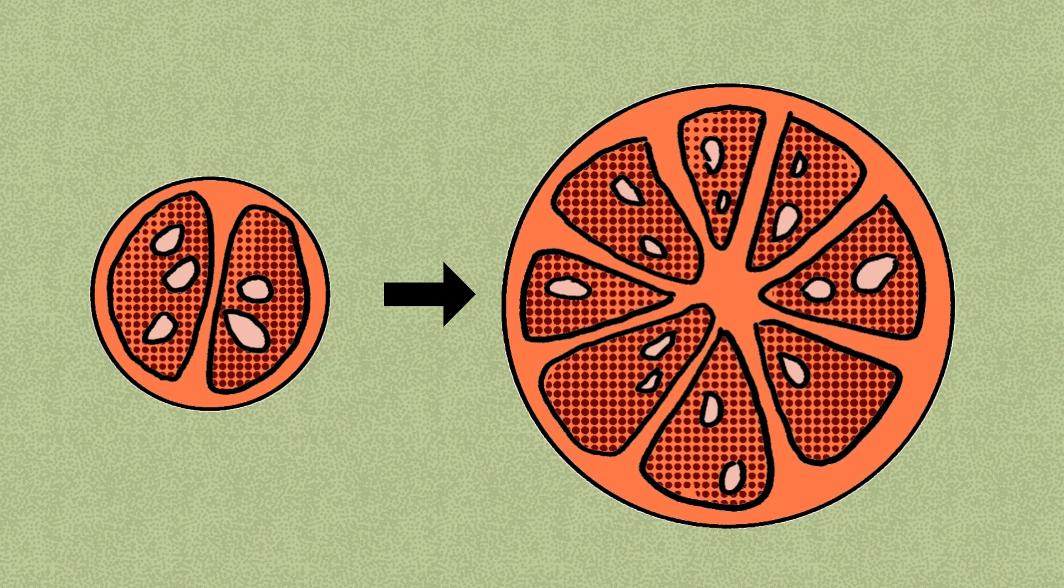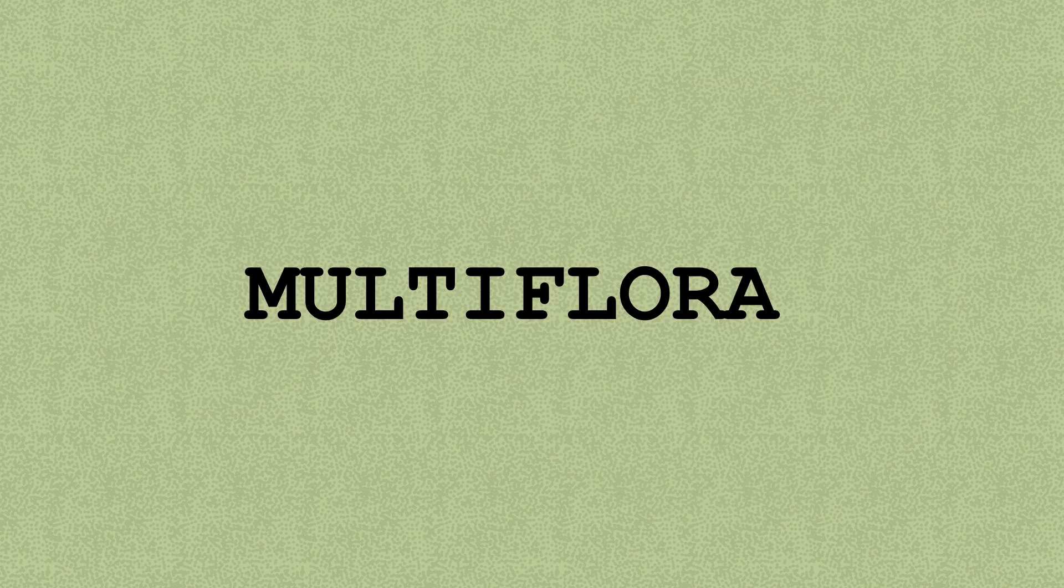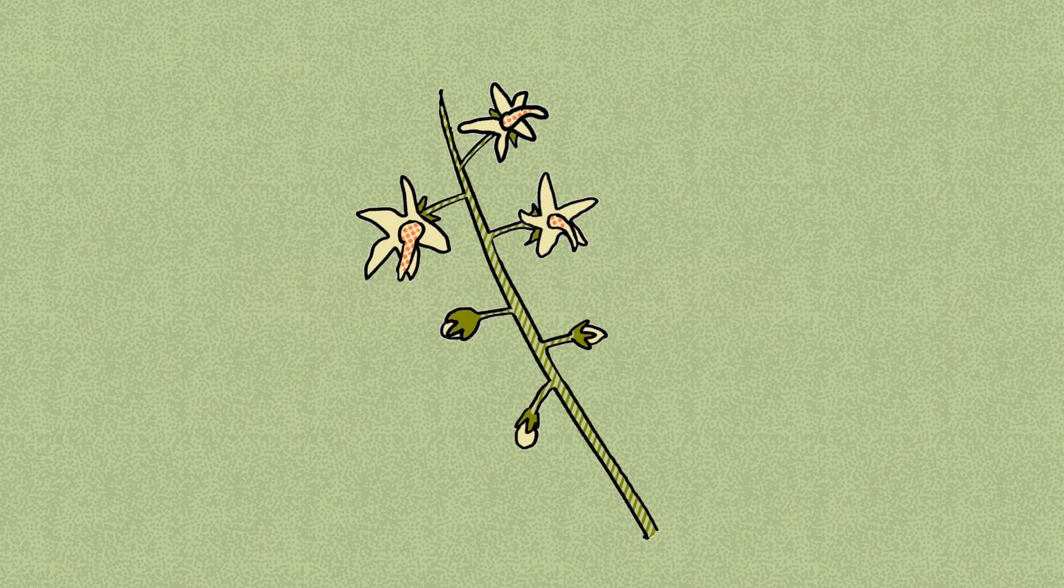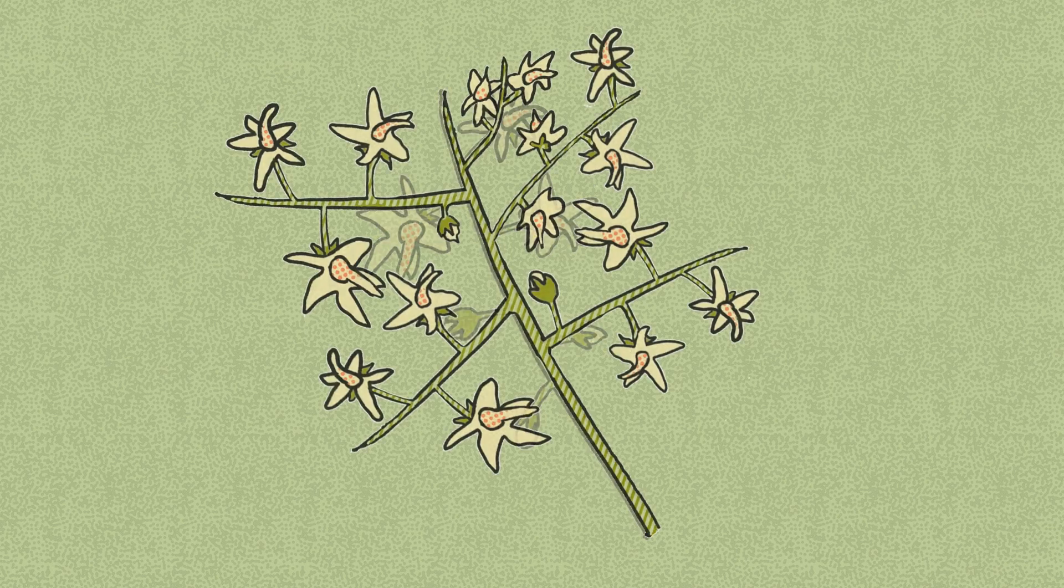But with this change alone, the plant would still be producing only a few fruits every now and then. So they changed another gene called multiflora. This gene regulates the development of floral inflorescences. Breaking it caused another inflorescence to sprout in place of each flower, leading to many more fruit.